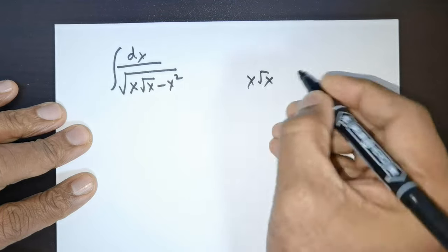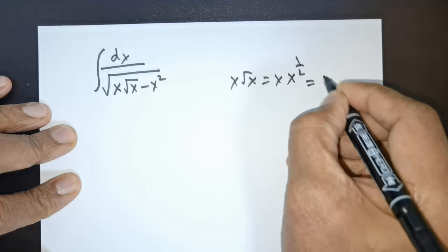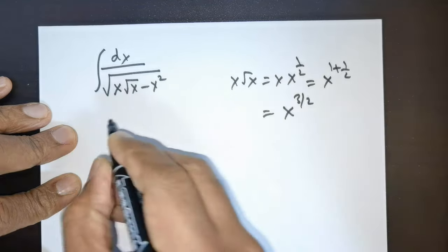First, multiply x with root of x. This is x times x raised to 1/2, which is x raised to 1/2 plus 1, giving you x raised to 3/2.